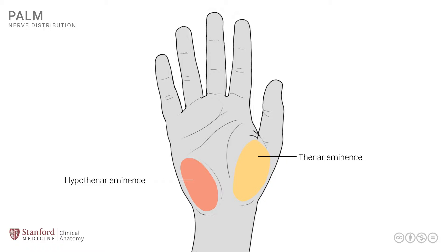The hand can be divided into two parts through a line going down the middle of the ring finger. That divides it into 1.5 digits on the ulnar side, and then the remainder of 3.5 digits on the more radial side.